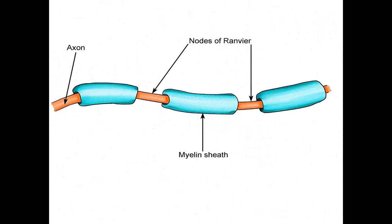Here you can see different parts of an axon: the nodes of Ranvier and the myelin sheath. The myelin sheath is a lipid layer, and the nodes of Ranvier are the parts of the axon where there is no lipid, meaning nerve impulses can pass through them. As a result, nerve conduction jumps from one node of Ranvier to another, because it cannot pass through the myelin sheath, which is an insulating layer.